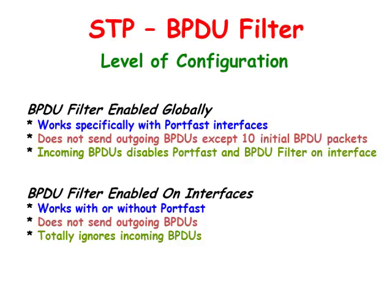When BPDU filter is enabled globally, it works specifically with port fast interfaces. It does not send out outgoing BPDUs, except for the 10 initial BPDU packets to verify that the topology is loop free.